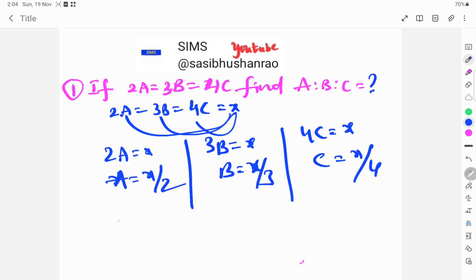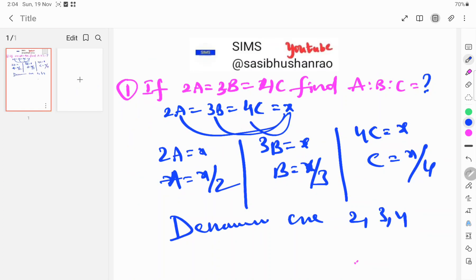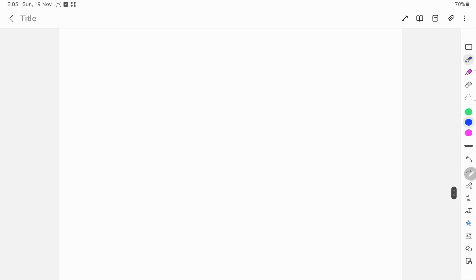The denominators are 2, 3, and 4. Now take the denominators 2, 3, 4. Now find the LCM of the denominators 2, 3, 4.